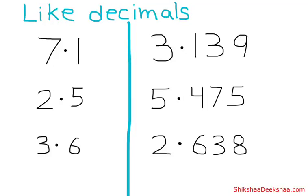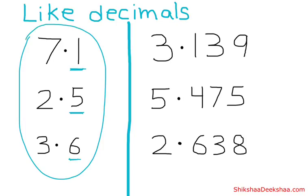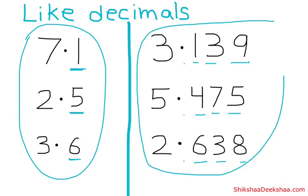Like decimals: if we have the same number of decimal places after the point, then those numbers are called like decimals. For example, if we have just one place after the point, they are like decimals. Here we have one, two, three places after the point — and the other numbers also have one, two, three places after the point — so they have the same number of decimal places and are like decimals.